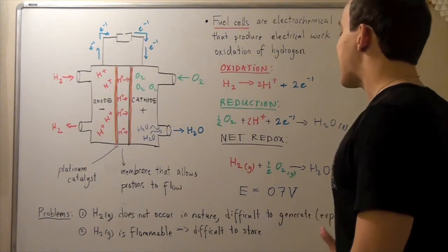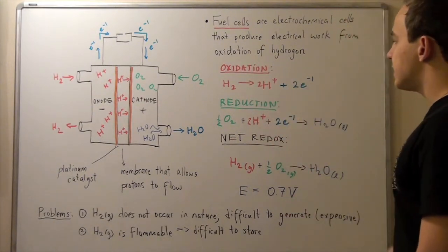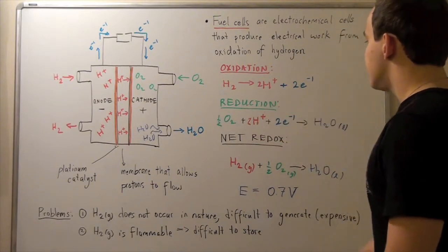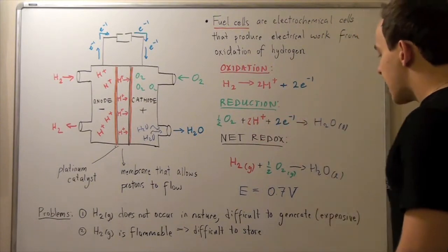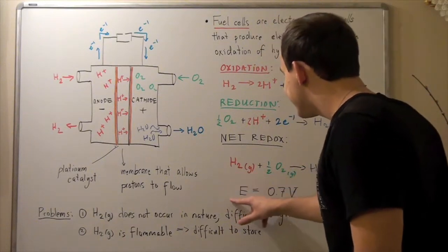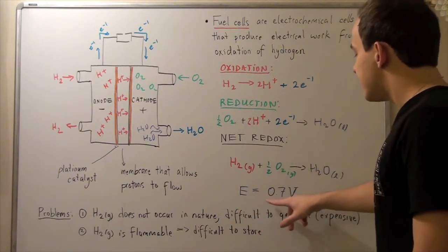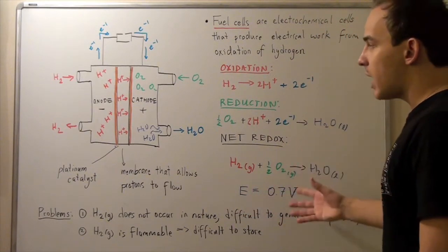Now our net redox reaction is found by simply adding these up. We see that the H-plus ions cancel, the electrons cancel, and we have the following redox reaction. Our E is 0.7. Our cell potential for our fuel cell is 0.7 volts. It's positive.